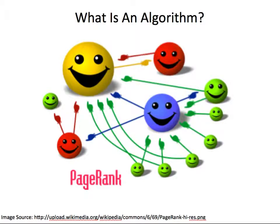So for starters, what is an algorithm? From Google's standpoint, an algorithm is basically a series of metrics or ingredients that go into how they determine which websites will rank highly for any given search term. With Google, there's over 250 different metrics, different ingredients. Nobody knows exactly what those ingredients are, and those ingredients also change over 400 times a year.